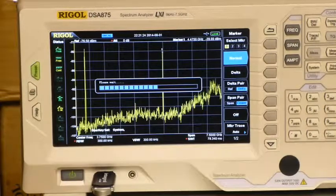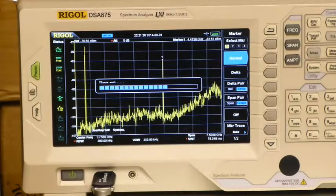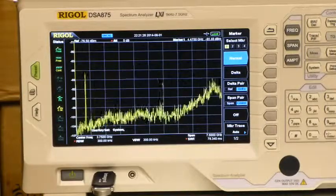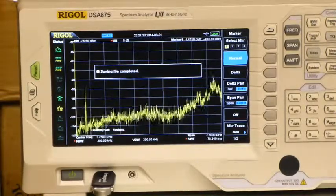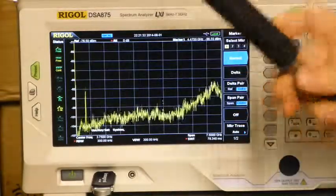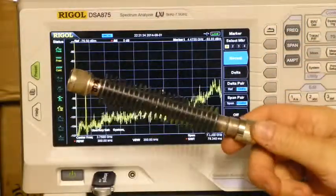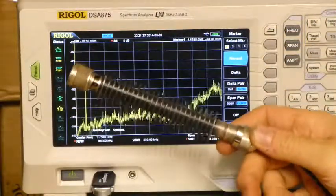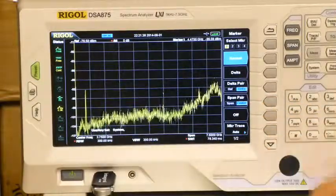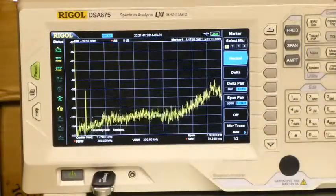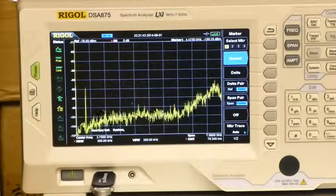Just a reminder while it's saving that when you're doing any measurements with the analyzer, just make sure that you protect the input of the analyzer. I'm using this nice wide band attenuator which does about 40 dB of attenuation just to protect the sensitive input of the DSA875.